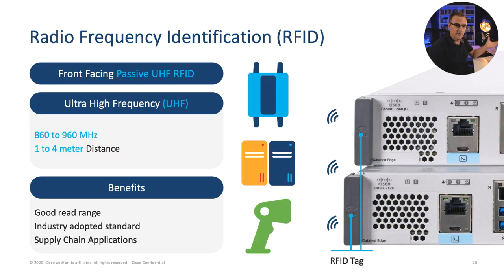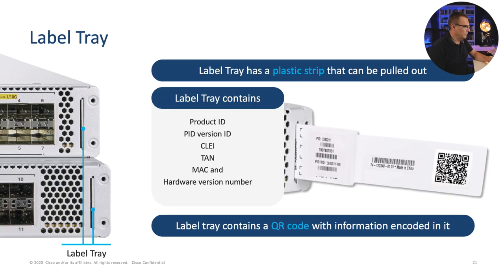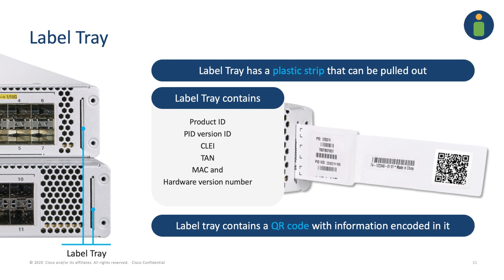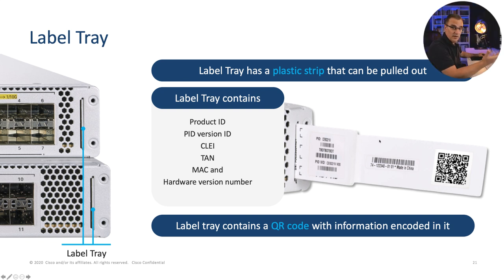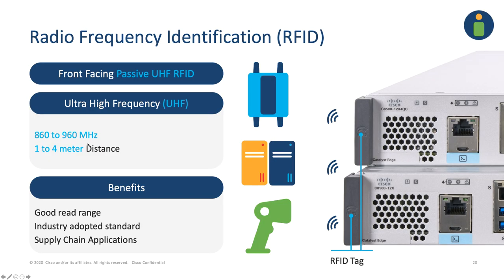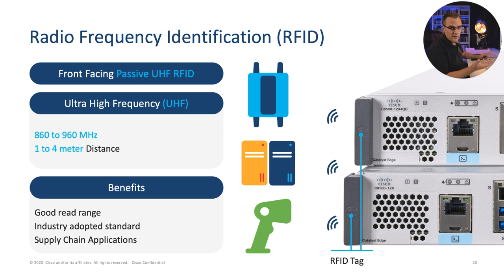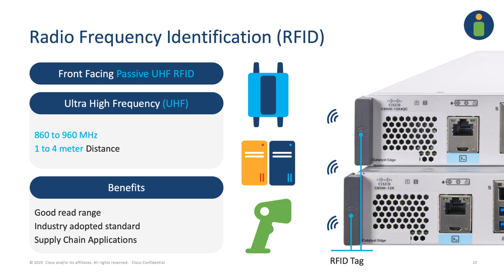These devices have a lot of features. One example is RFID tags to identify devices. If you're in a data center with racks and racks of equipment, you may struggle to identify a device in front of you. Cisco have two options: a label tray with a plastic strip you can pull out to get device details, or within one to four meters you can use RFID to identify a device. It has an RFID tag, making it much easier to identify devices in various scenarios.